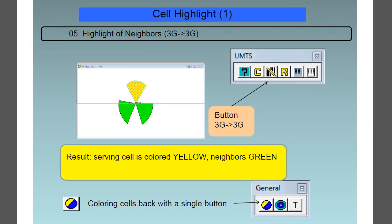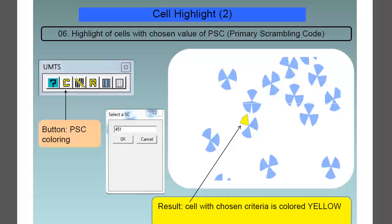Feature number 5, the highlight of neighbors, 3G to 3G, and as a result, the serving cell is colored yellow and the neighbors are green.